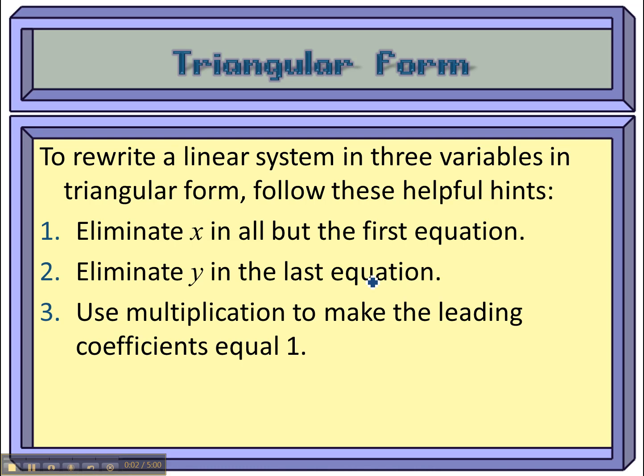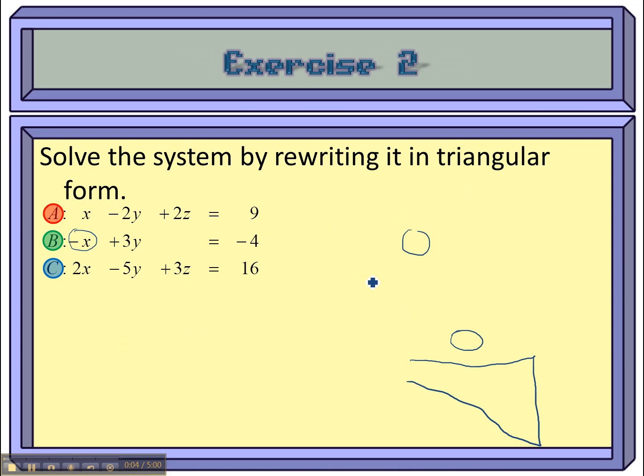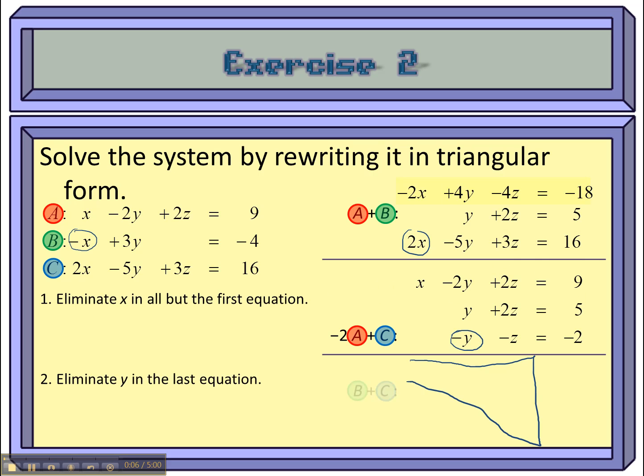All right, in the previous example, we just learned how we could take a system of equations and put it into a triangular form using the row operations, the elementary row operations.